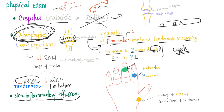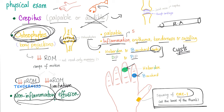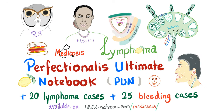We also find non-inflammatory effusion. The number one joint involved in osteoarthritis is the CMC1 — the first carpometacarpal joint at the base of the thumb. We call it squaring of the CMC: instead of a normal rounded contour, it appears squared.